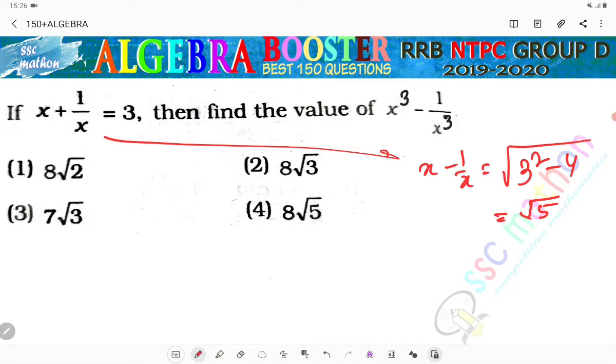So x minus 1 by x, then x cube minus 1 by x cube kya hoga? Sir, x minus 1 by x ka cube plus 3 times x minus 1 by x, answer aa jayega is formula se.